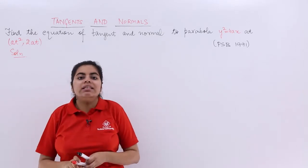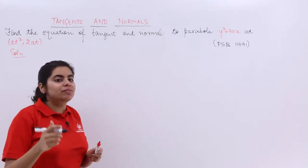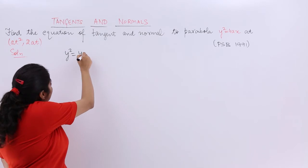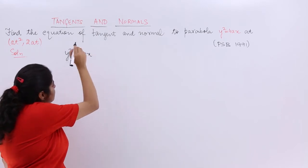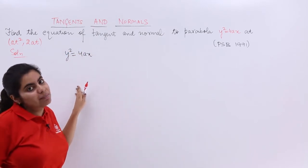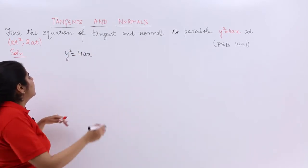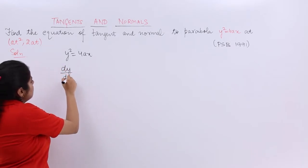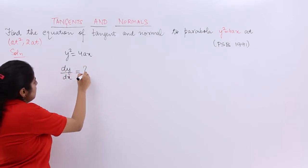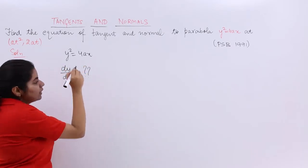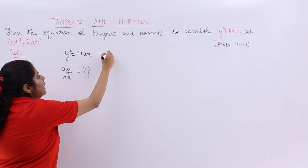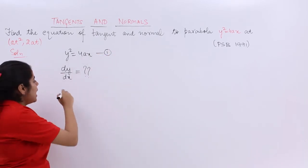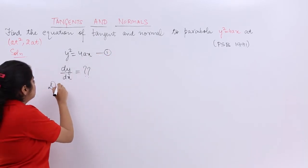The given equation of the curve is the parabola y² = 4ax. Our first task is always to find dy/dx, that is the slope. We have to find dy/dx — that is our task. For that, I'll name this as equation number 1 and differentiate it.